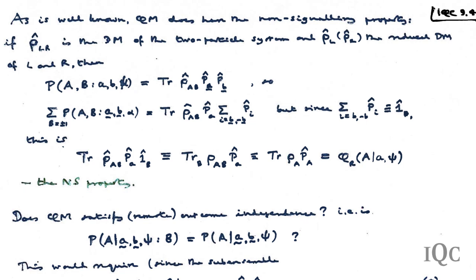If rho_LR is the density matrix of the two-particle system and rho_L, rho_R the reduced density matrices of the two subsystems, then the sum over B of the joint probability is given by the trace expression. The sum over possible projections — that is, over the possible final states of B — is just the unit operator, so that's equal to the single-particle expression. That in turn gives you the probability which now has no reference whatever either to little b or to the outcome of capital B. So quantum mechanics does satisfy the non-signaling condition, to our relief.